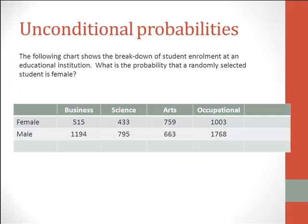The following chart shows the breakdown of student enrollment at an educational institution. What is the probability that a randomly selected student is female? For the purpose of this lesson, let us consider that this is the total enrollment at the educational institution, and that's all we are analyzing. So this is our data set — it is also the population, because that's the total number of students we have at this institution.